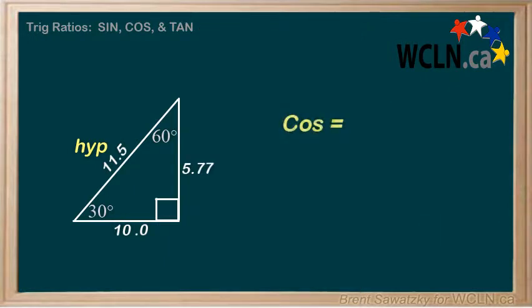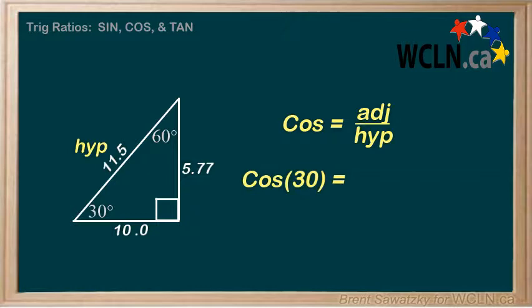Cosine is the ratio of the adjacent side over the hypotenuse. What if we said cos of 30? Again, we know that 30 is our reference angle here. Adjacent to the 30 is this side here, in this case, 10. And we put it over our hypotenuse, 11.5.